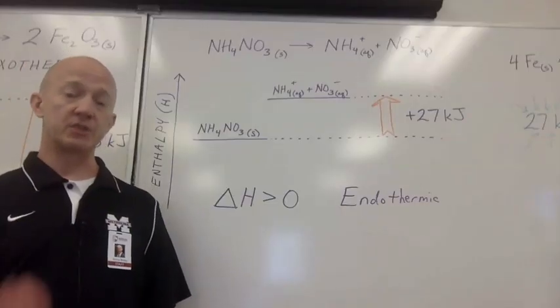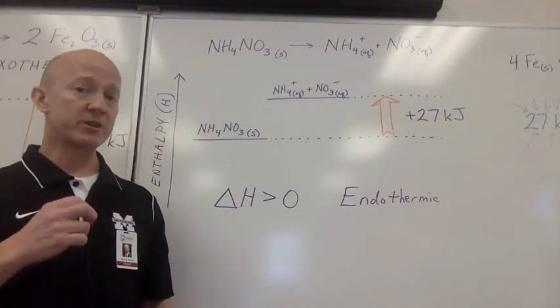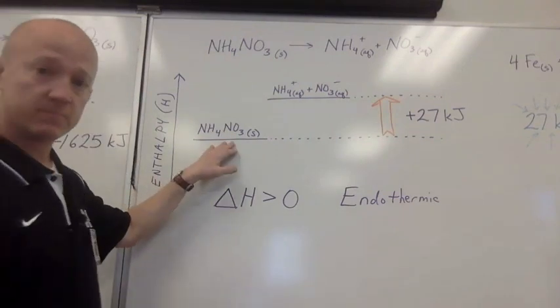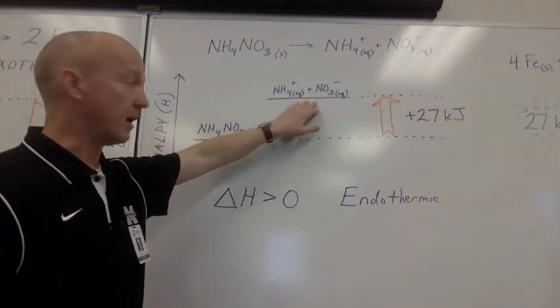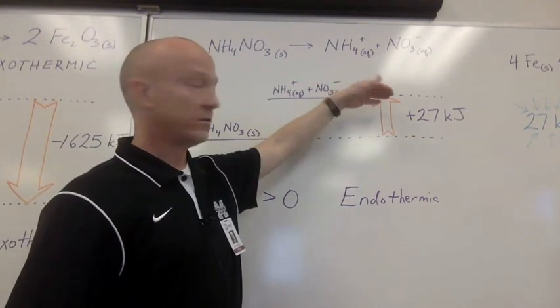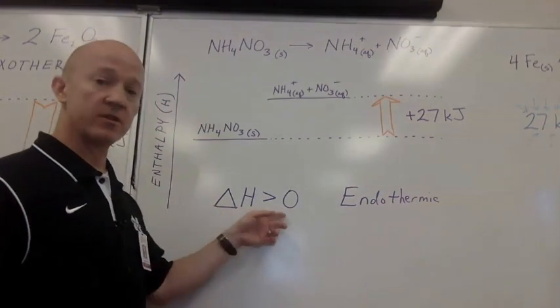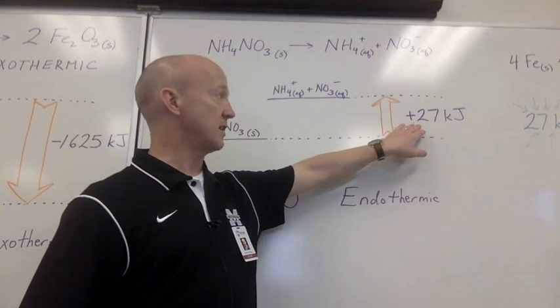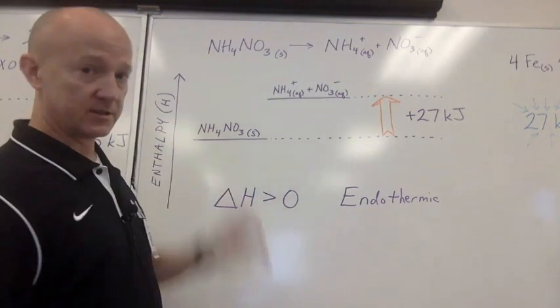On the other hand, we can have reactions that do just the opposite. When we take ammonium nitrate and put it in water, it requires energy for it to dissociate into ammonium ion and nitrate ion. So, here's our reactant, ammonium nitrate, here on our enthalpy scale. These are the products, ammonium ion and nitrate ion. Notice that there's an increase in energy overall, 27 kilojoules worth. Whenever you have an enthalpy change that's greater than zero, that is an endothermic process. That is to say, a positive heat content at the end of the reaction means it required energy. Energy was one of the reactants in this case.